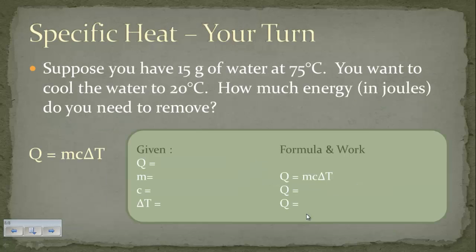Now it's your turn. Using this problem: suppose you have 15 grams of water at 75°C and you want to cool it to 20°C — how much energy in joules do you need to remove? Since this involves water, think about which specific heat capacity to use — it's 4.18 J/g°C for water. Set up your given column, show your formula and work, and bring this to class tomorrow. Write down any questions and bring those to your teacher as well.